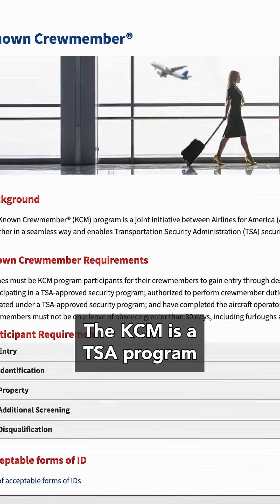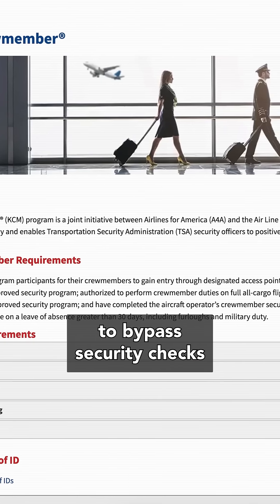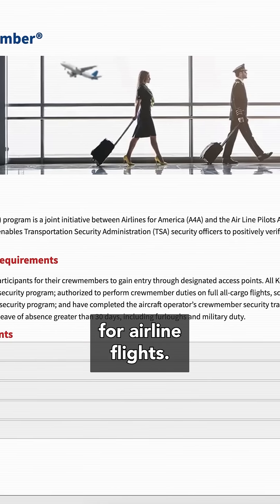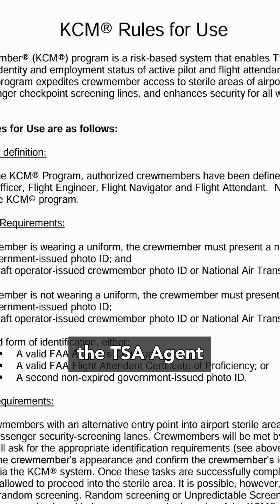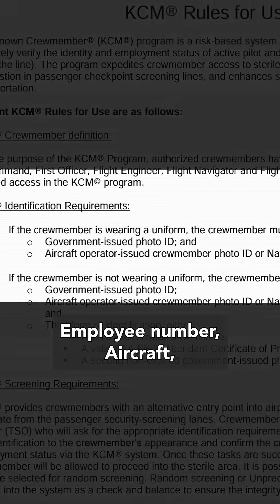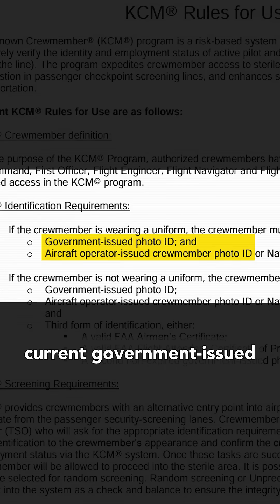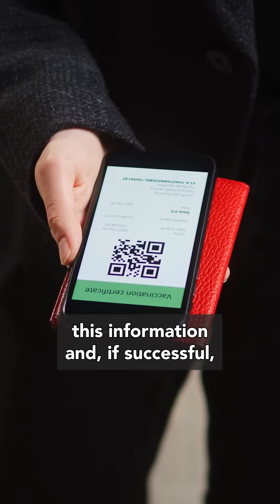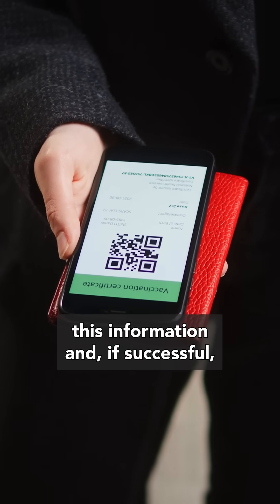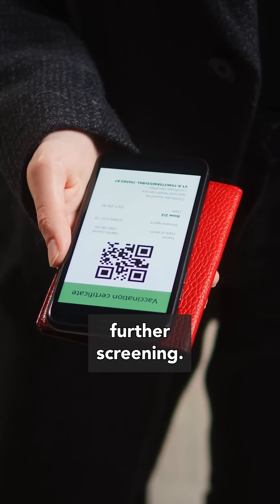The KCM is a TSA program that allows pilots and flight attendants to bypass security checks for airline flights. Instead, they provide the TSA agent with information like their employee number, aircraft crew member photo ID, current government-issued photo ID, and a KCM barcode. The TSA verifies this information and, if successful, grants the employee access without any further screening.